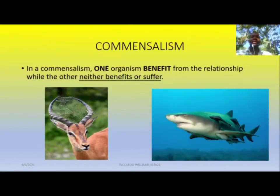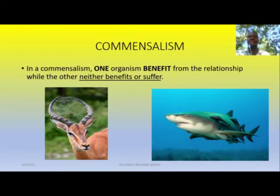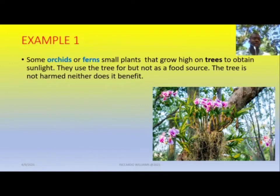Now let's move on to commensalism. This type of relationship is where one organism benefits from the relationship while the other neither benefits nor suffers. One benefits, but the other one is unaffected by the relationship — they don't benefit nor do they suffer. That is an important point: one benefits, but the other one is unaffected.